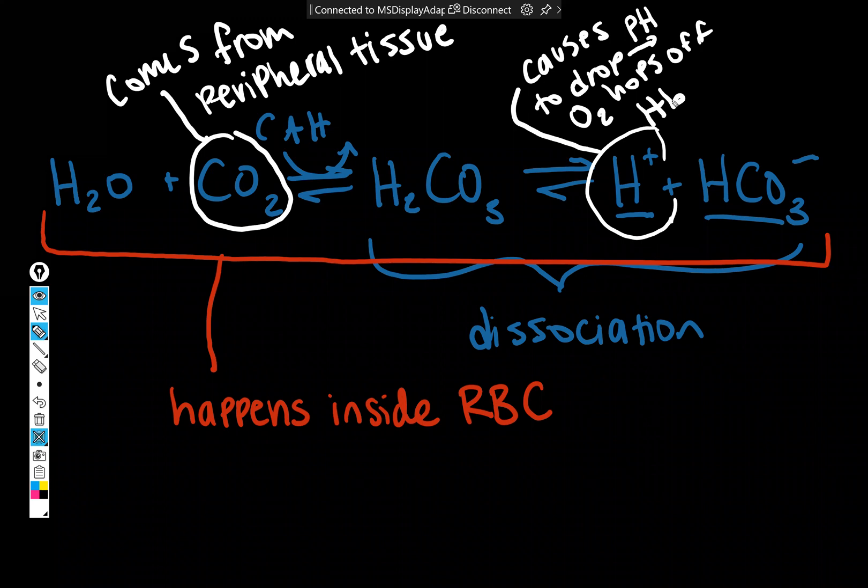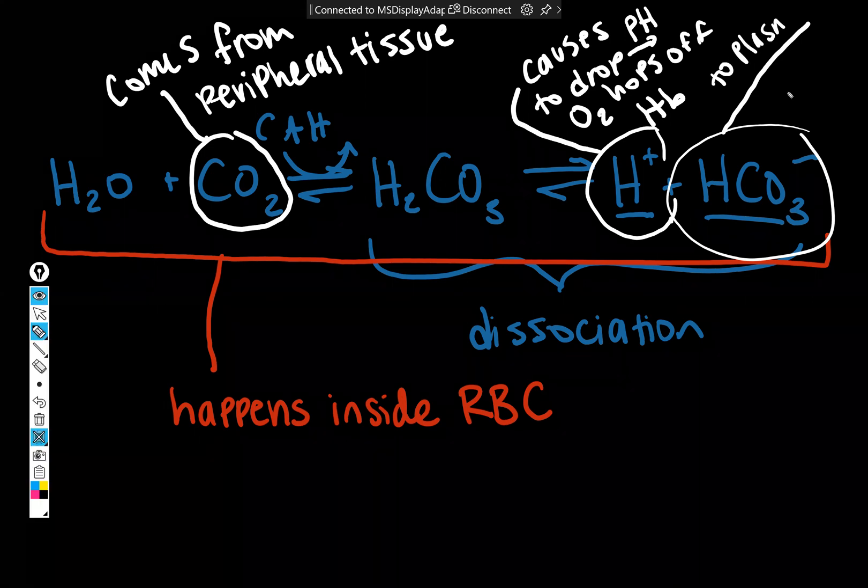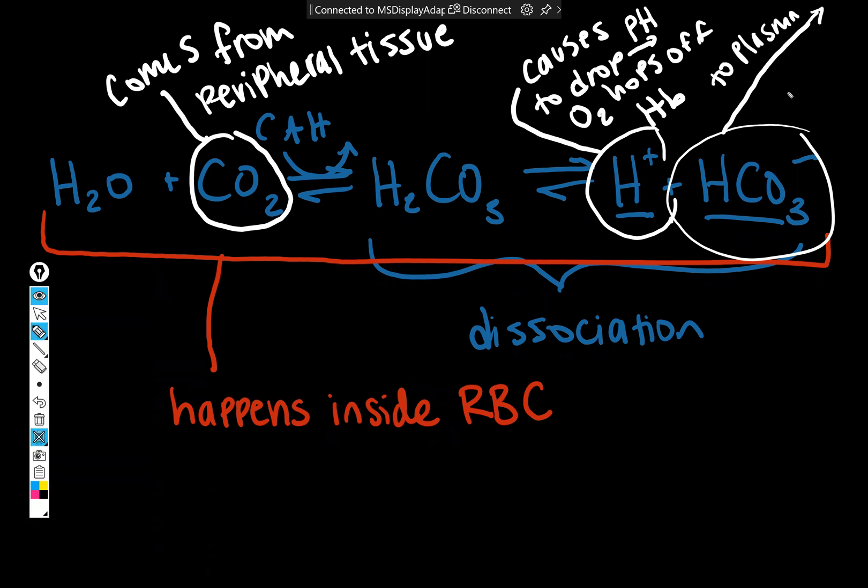And then the bicarbonate, so notice we have CO2 here. So this CO2 has now been transformed into bicarbonate. So where does the CO2 go? It gets rearranged, it gets dismantled partially, and it ends up as bicarbonate instead. And then this goes to the plasma in exchange for a chloride ion.